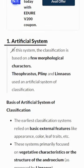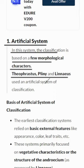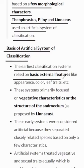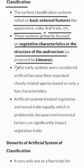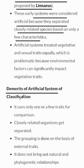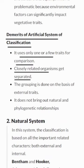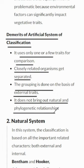Artificial System: In this system, classification is based on a few morphological characters. Notable proponents include Theophrastus, Pliny, and Linnaeus. Early classification relied on basic external features such as appearance, color, and leaf traits, often focusing on vegetative characteristics or the structure of the androecium. Importantly, artificial systems separated closely related species based on only a few characteristics, and they don't reveal natural and phylogenetic relationships among plants.